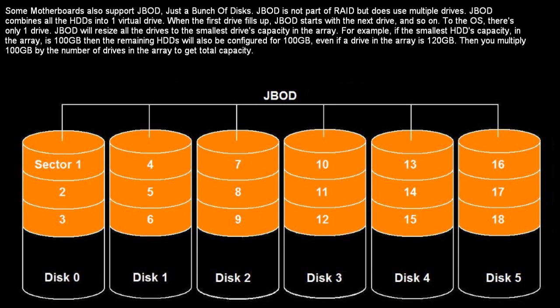Finally, some motherboards also support JBOD, just a bunch of disks. JBOD is not part of RAID, but does use multiple drives. JBOD combines all the drives into one virtual drive. When the first drive fills up, JBOD starts with the next drive, and so on. To the OS, there's only one drive. JBOD will resize all the drives to the smallest drive's capacity in the array. For example, if the smallest hard disk drive's capacity is 100GB, then the remaining hard drives will also be configured for 100GB, even if a drive in the array is 120GB. Then you multiply 100GB by the number of drives in the array to get your total capacity.